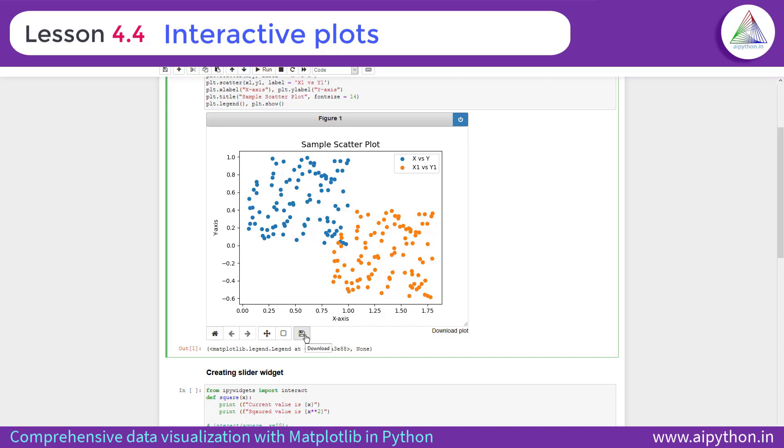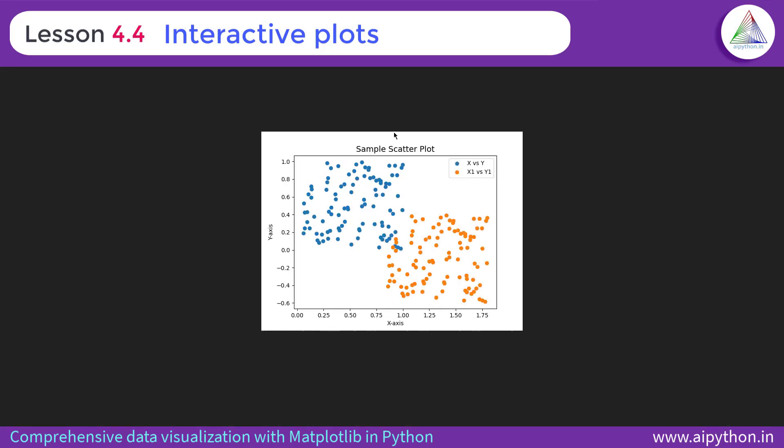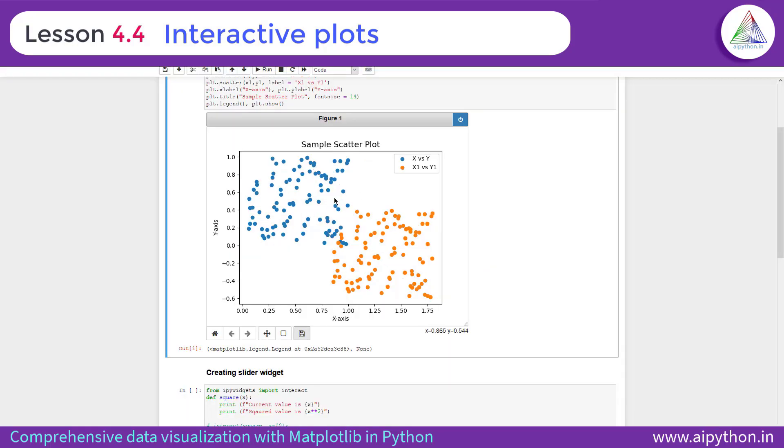So this is to save the plot. In case if you wanted to save this as an image, you can click over here and this graph is generated, I mean this image is generated and you can right click and save this image. This is one option that you have in the interactive graph.